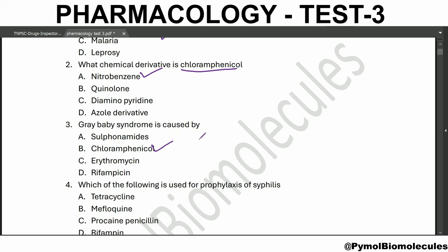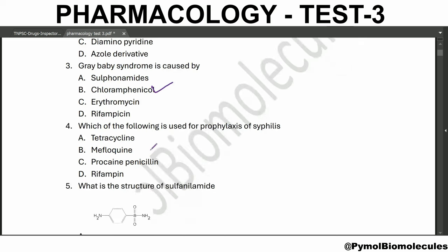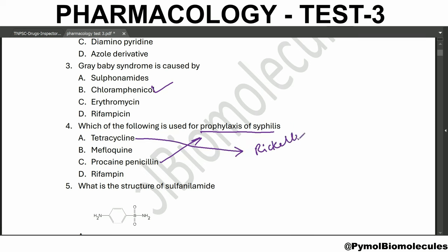Gray baby syndrome is caused by chloramphenicol. For prophylaxis of syphilis, we can use procaine penicillin. Tetracycline can be used for prophylaxis of rickettsial infection.